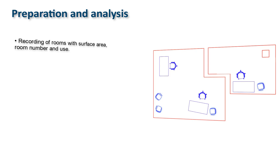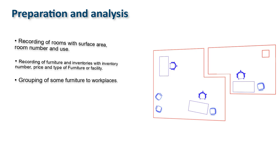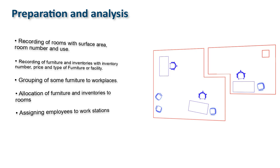Recording of rooms with surface area, room number, and use. Recording of furniture and inventories with inventory number, price, and type of furniture or facility. Grouping of some furniture to workplaces. Allocation of furniture and inventories to rooms. Assign employees to workstations. There are many plans of the same kind.